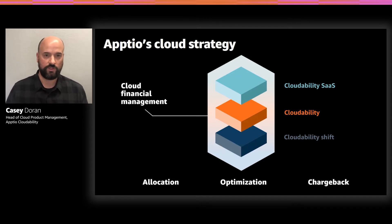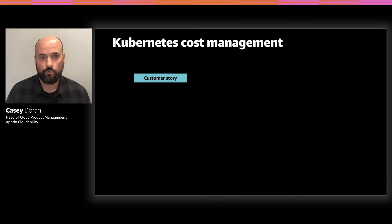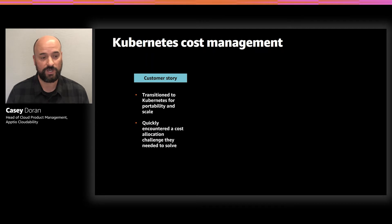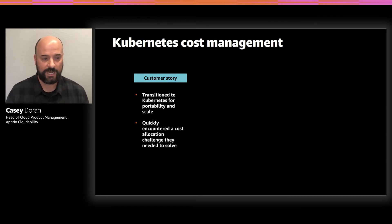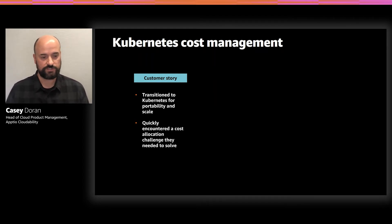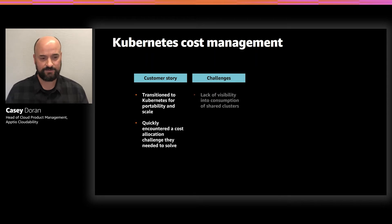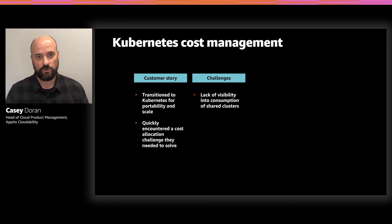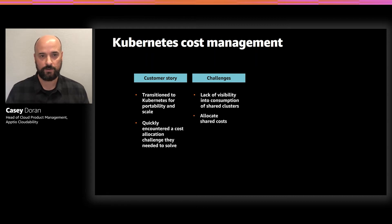I want to start with a customer story. Around 2017, customers started coming to us who were using Kubernetes — for portability, scale, and other great reasons. But they were very quickly encountering a cost allocation challenge. They had a lack of visibility into consumption of their shared clusters, needed to allocate shared costs to the correct cost centers, and needed to allocate Kubernetes workloads alongside non-Kubernetes workloads to perform full chargeback across both constructs.